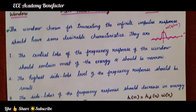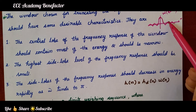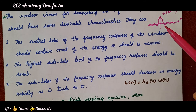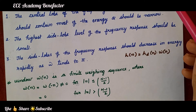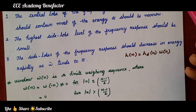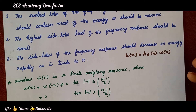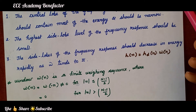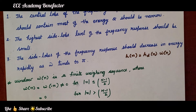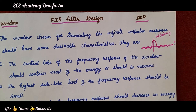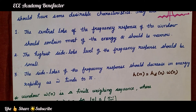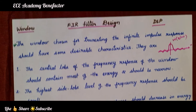The second characteristic is: the highest side lobe of the frequency response should be small. The third characteristic is: the side lobes of the frequency response should decrease in energy rapidly as ω tends to π. These are the three characteristics that a finite weighing sequence should have when truncating the infinite impulse response for the design of an FIR filter.